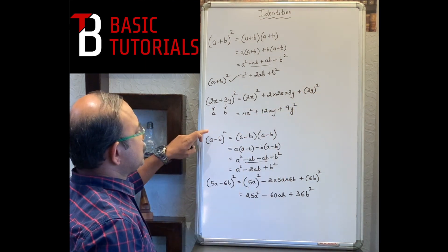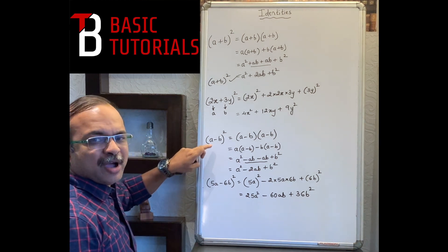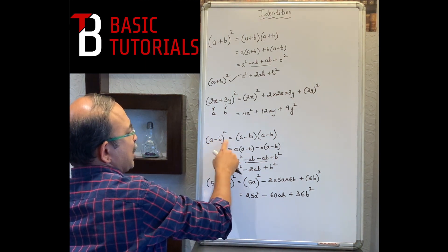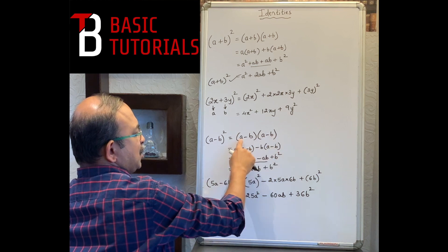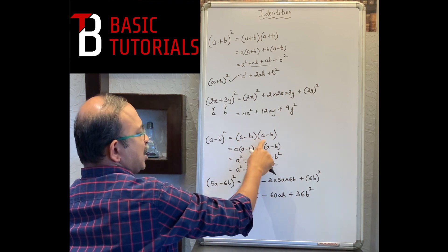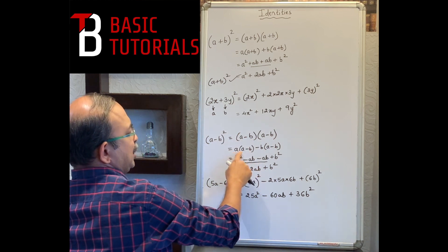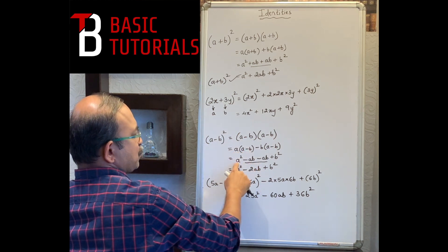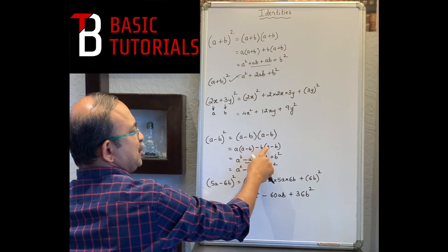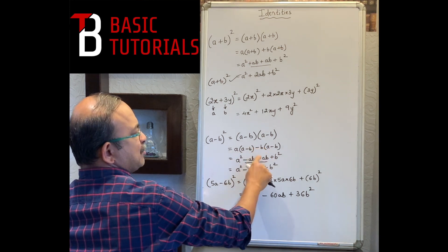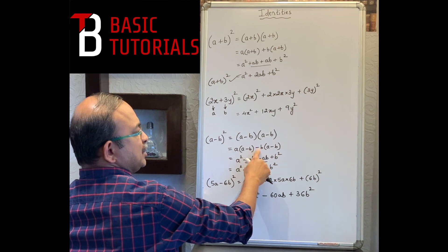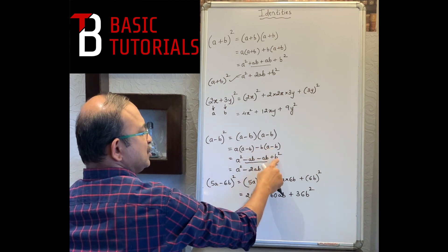Let's go to the next identity: (a-b)². We expand (a-b)(a-b) by multiplying a by (a-b) and then (-b) by (a-b). So: a×a = a², a×(-b) = -ab, (-b)×a = -ab, and (-b)×(-b) = +b².